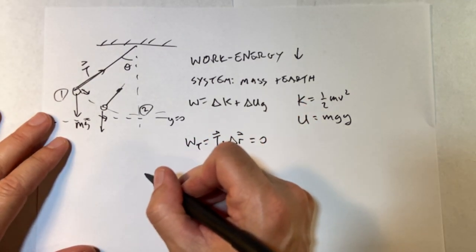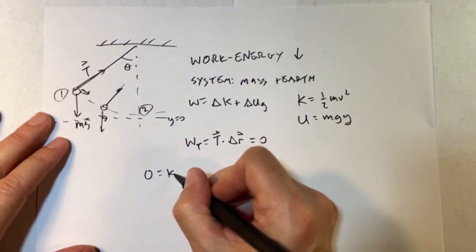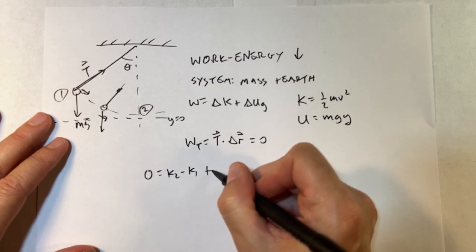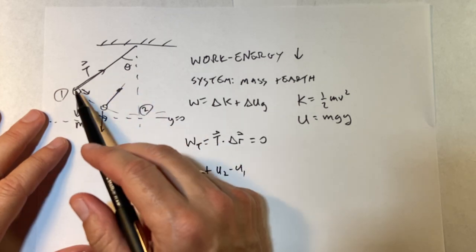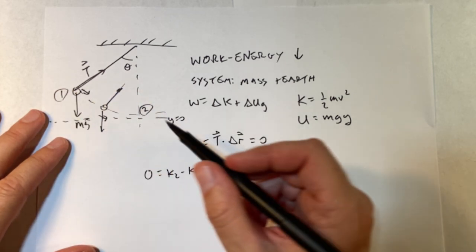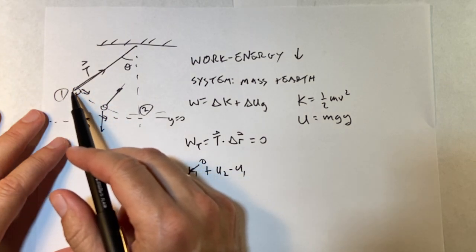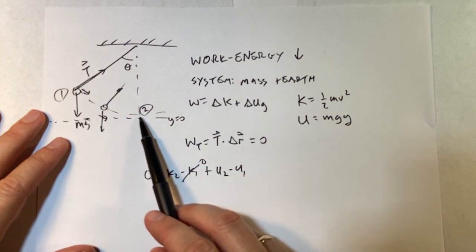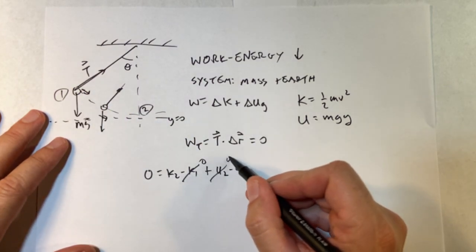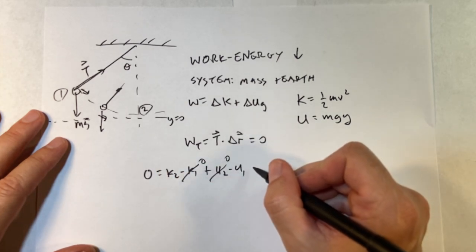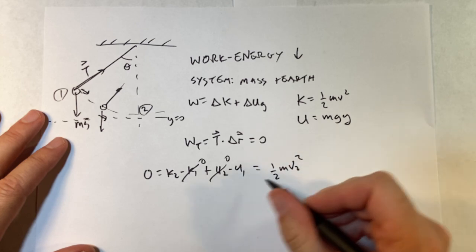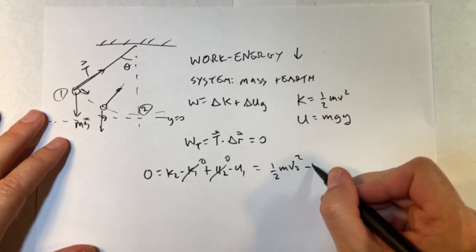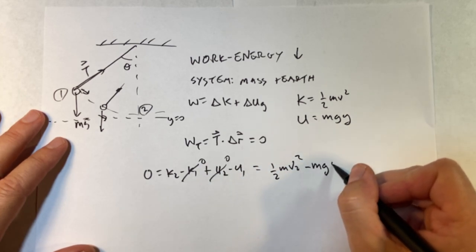Okay. So that means let's start putting things together. I have the work is zero K2 minus K1 plus U2 minus U1. Now, two of these terms are zero. The kinetic energy at point one is zero because it's not moving. And the potential energy at point two is zero because it's at Y equals zero. So that means I have one half M V2 squared, and then I have minus M G Y1.